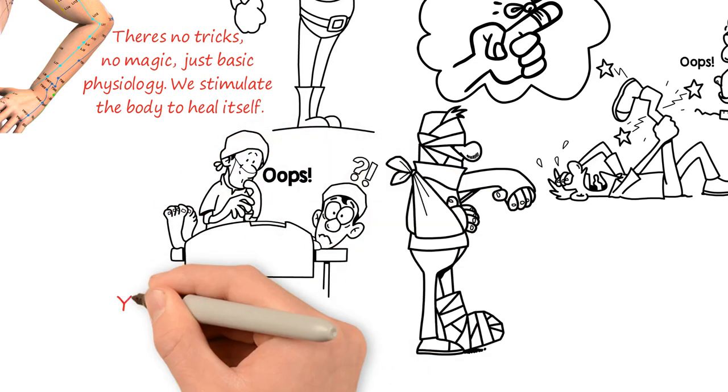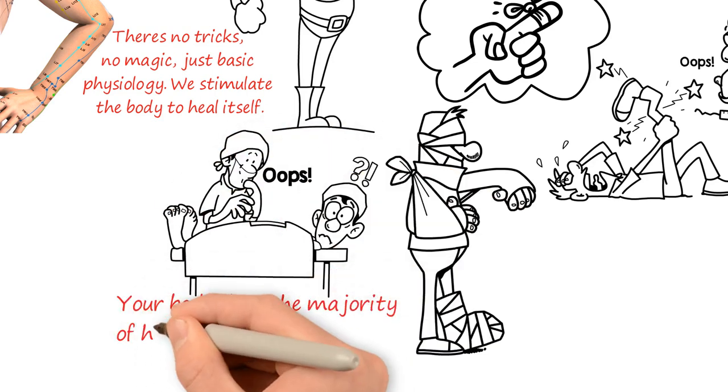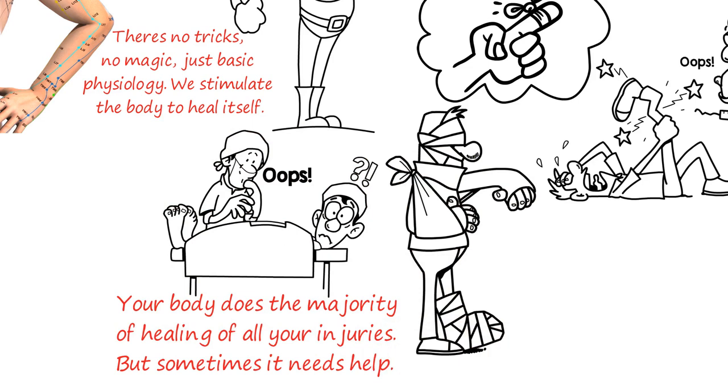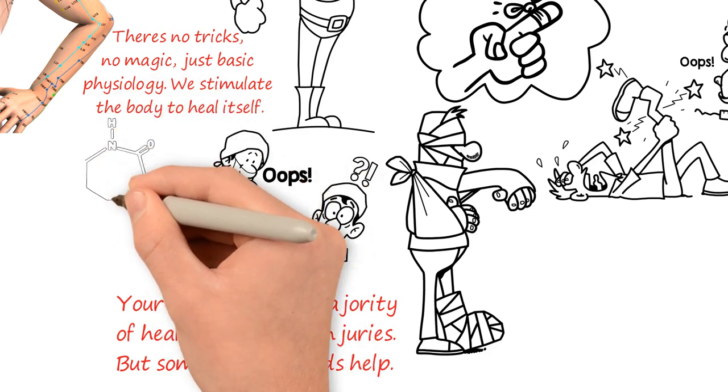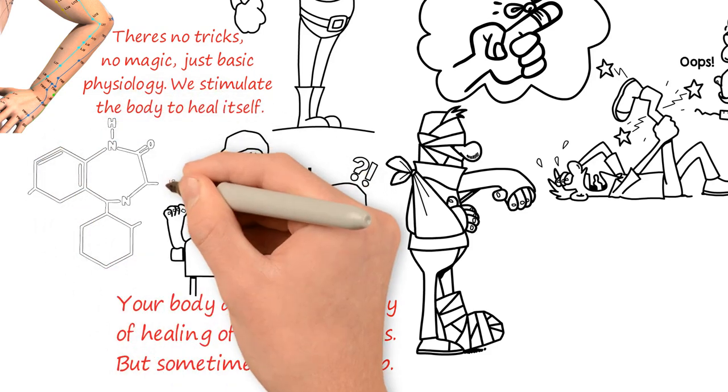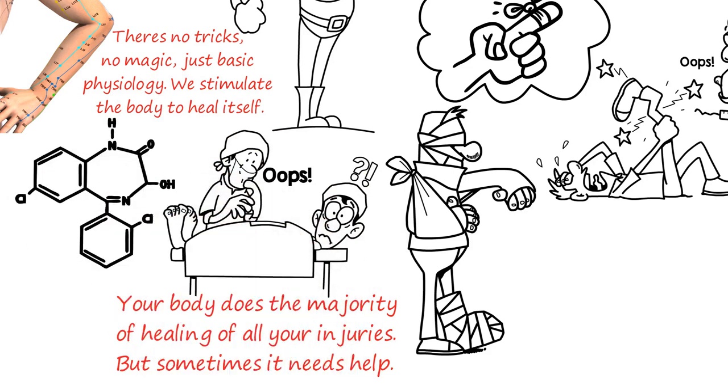Getting the picture now? Your body does the majority of healing of all your injuries, but sometimes it needs help. Your body contains a vast array of healing mechanisms that are at work all the time. Did you know that there are 50 to 75 trillion cells in your body? Who looks after them? Your body does.